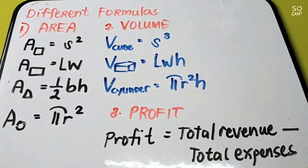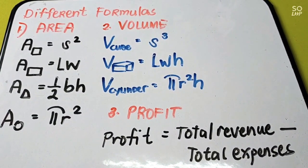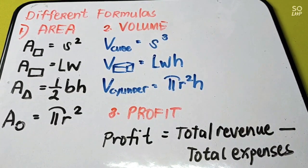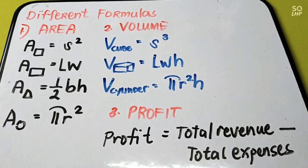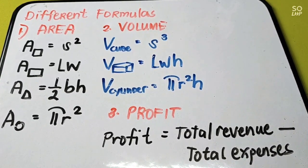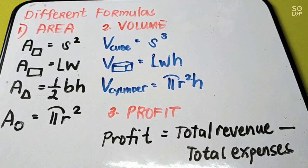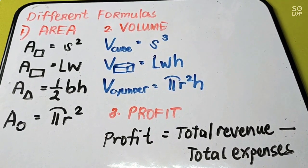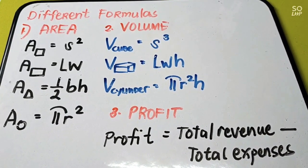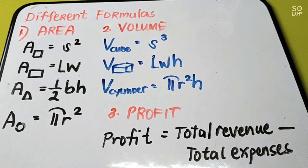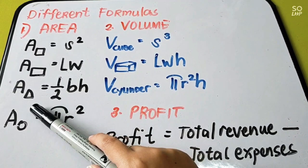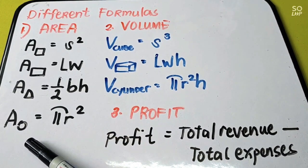In problem solving, we can encounter different kinds of problems. I will give you some of the formulas that we can apply in solving polynomial functions. We have area, volume, and profit. In area, we have the area of a square, a rectangle, a triangle, and a circle.